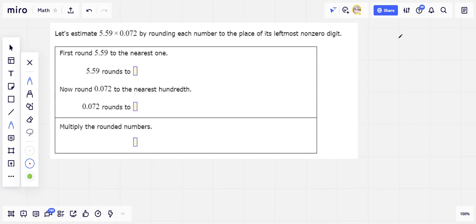Let's try another one. So let's round first. The leftmost non-zero digit here is the ones place, so we want to round to the nearest 1. So that's either going to be 5 or 6.